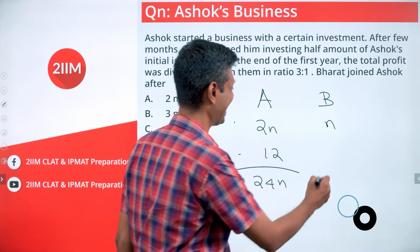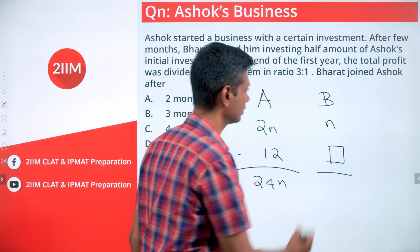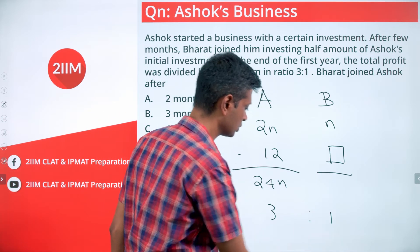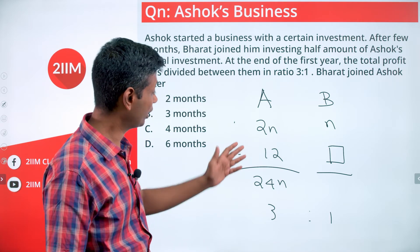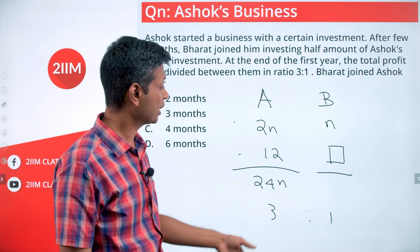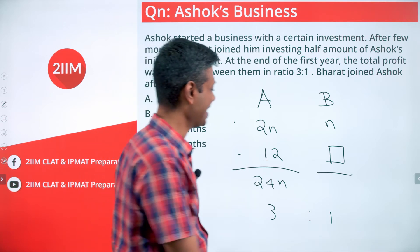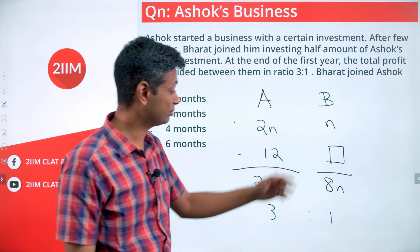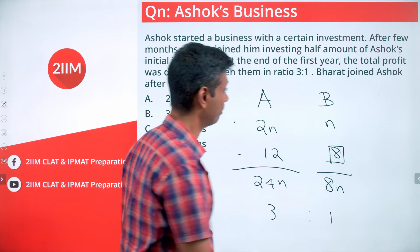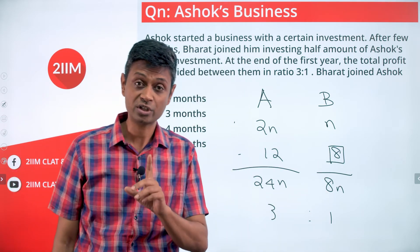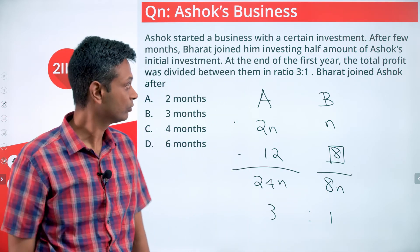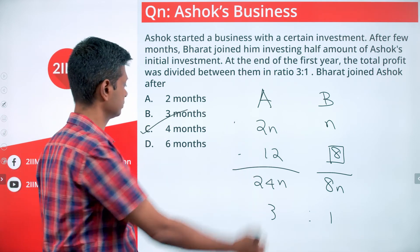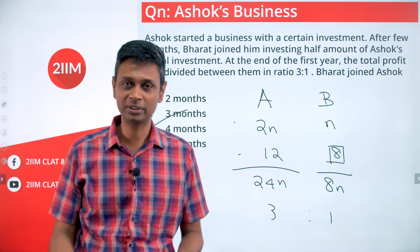Bharat's share is N into some number of months. They share the profit in the ratio 3 is to 1. If Ashok gets 24N, that represents 3 parts, then Bharat should get 1 part, which should be 8N. So Bharat has effectively invested for 8 months, meaning Bharat joined Ashok after 4 months.